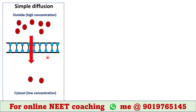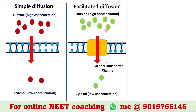In facilitated diffusion, substances also pass through the biological membrane from a high concentration area to a low concentration area — that means down the concentration gradient. In this picture we can see this molecule has higher concentration in the extracellular space and lower concentration in the cytosol, so this molecule will move from outside to inside. But unlike simple diffusion, this process requires assistance.